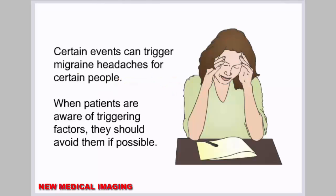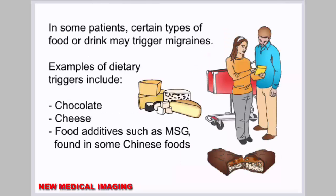Certain events can trigger migraine headaches for certain people. When patients are aware of triggering factors, they should avoid them if possible. In some patients, certain types of food or drink may trigger migraines. Examples of dietary triggers include chocolate, cheese, and food additives such as MSG found in some Chinese foods.